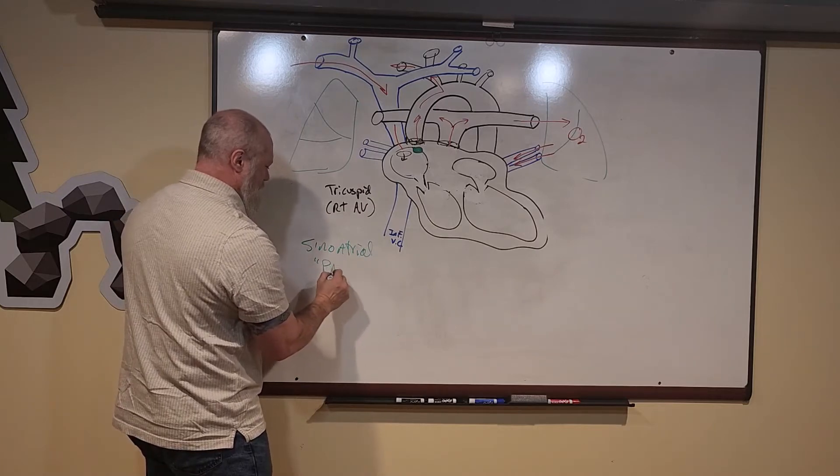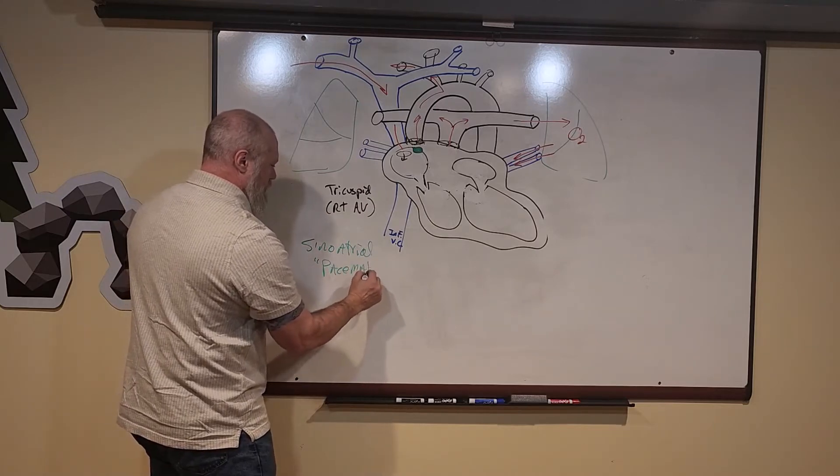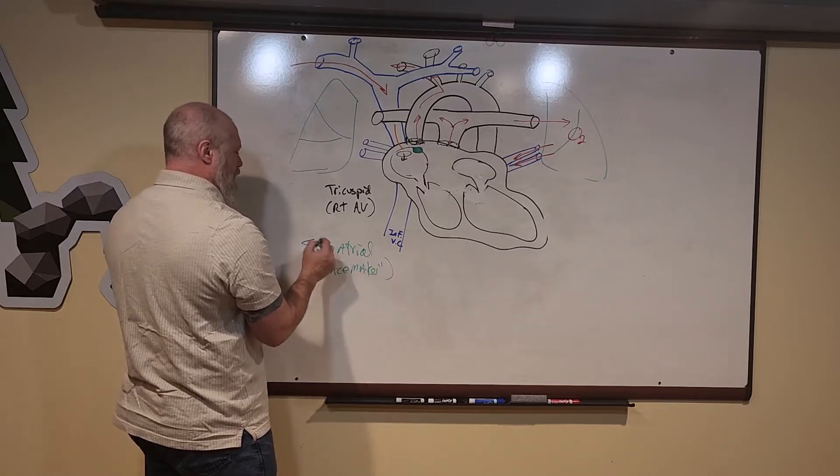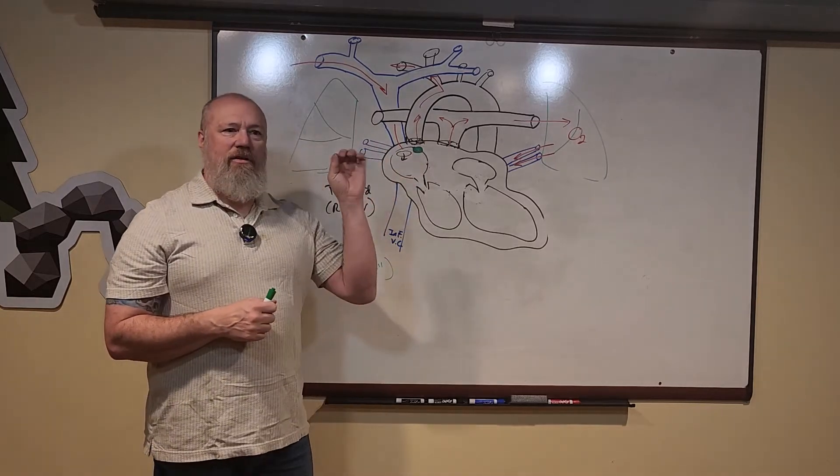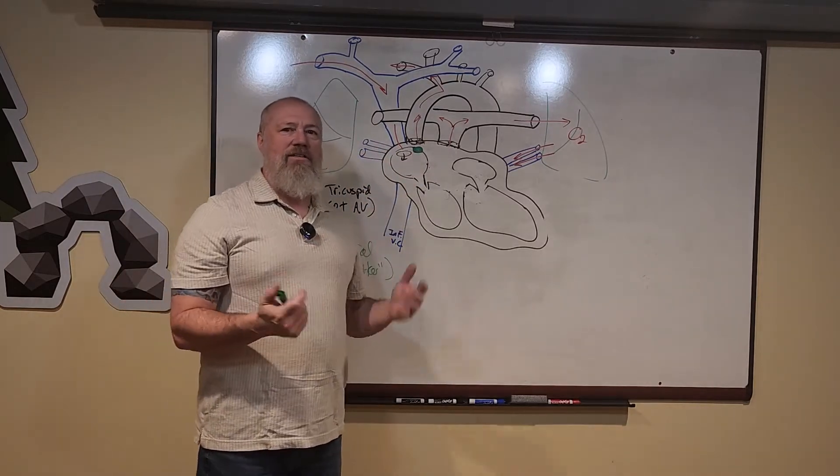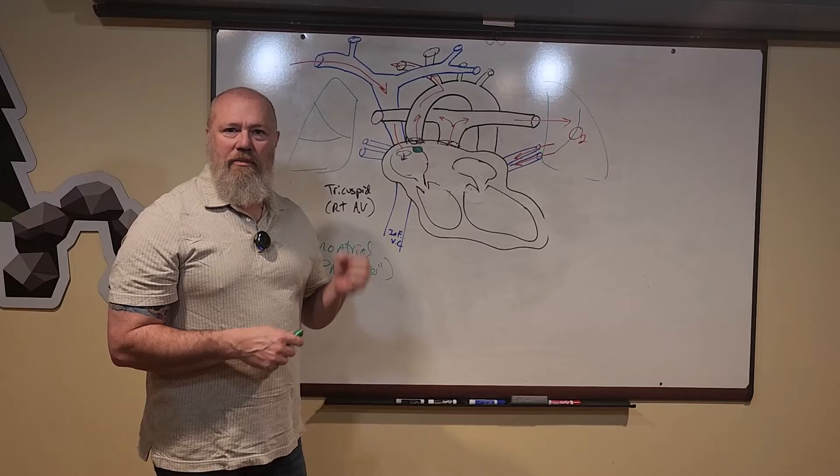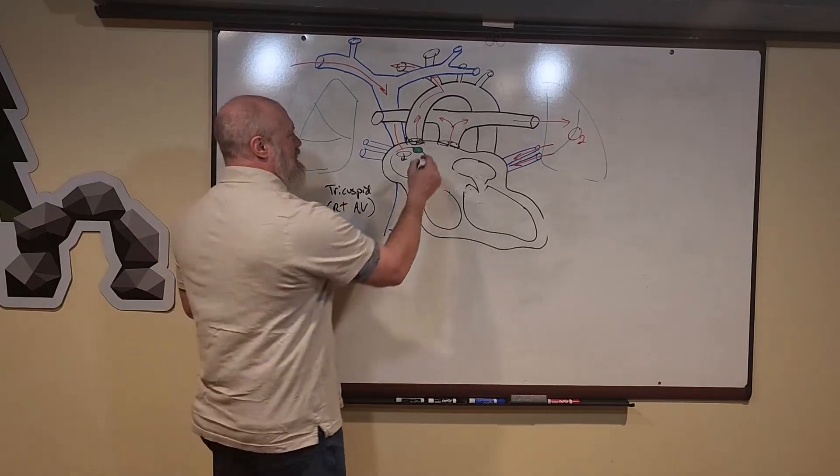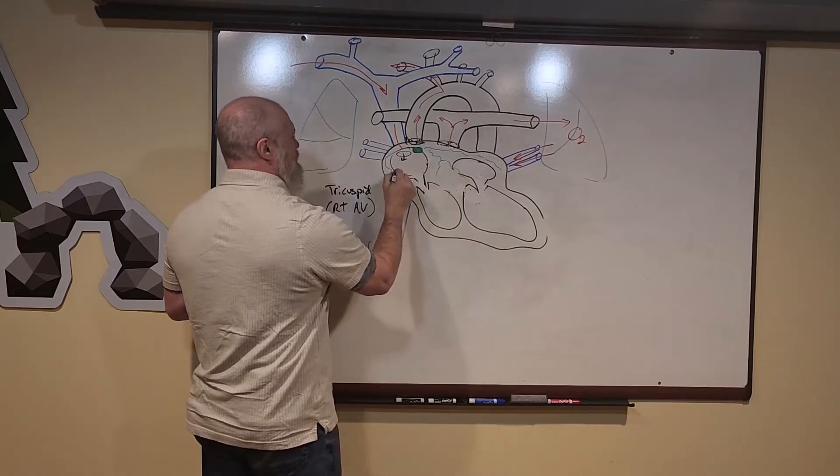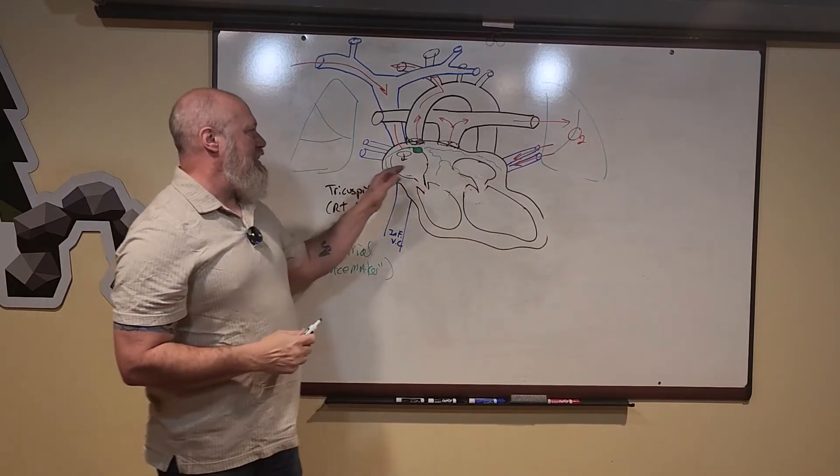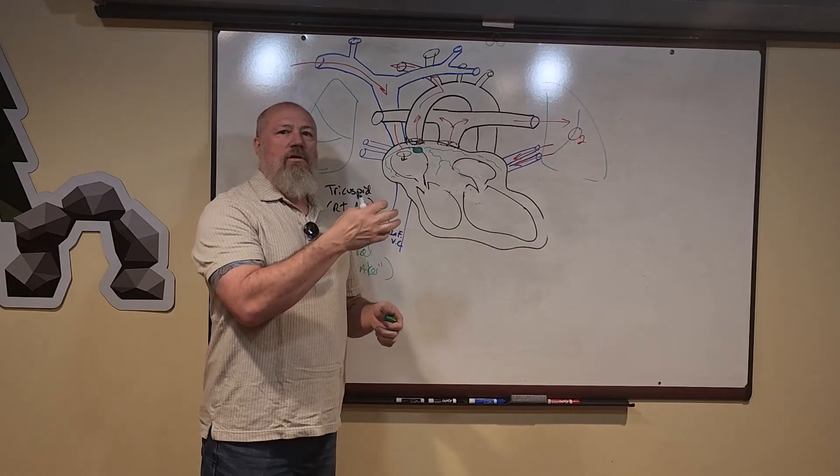Everybody uses the term pacemaker when we're talking about artificial pacemakers, but this is a little section, a little node of depolarizing tissue. On a certain rhythm it's going to depolarize. It's got little fibers that spread out through the atria, and when it depolarizes, it causes those muscle cells to contract.